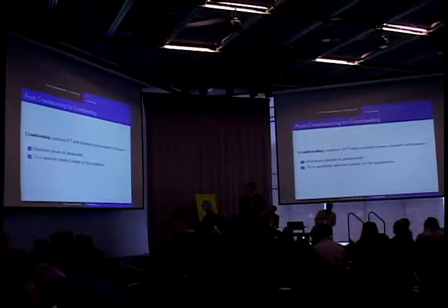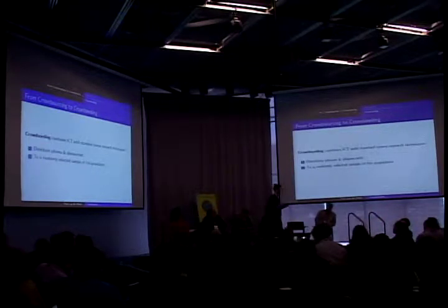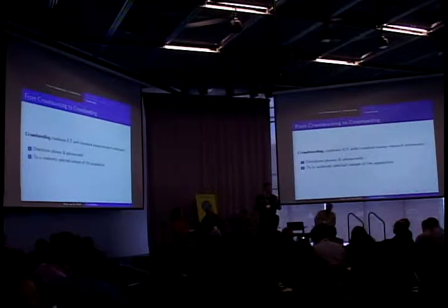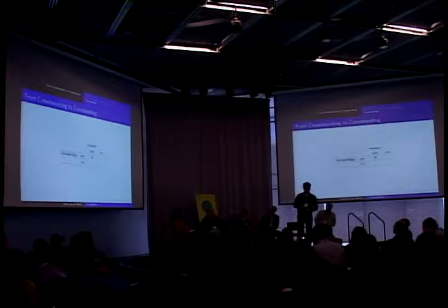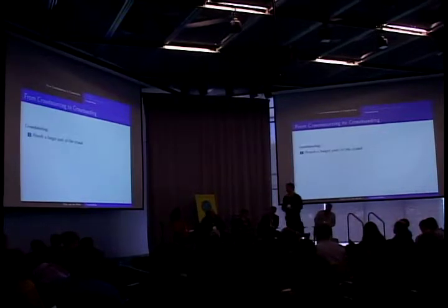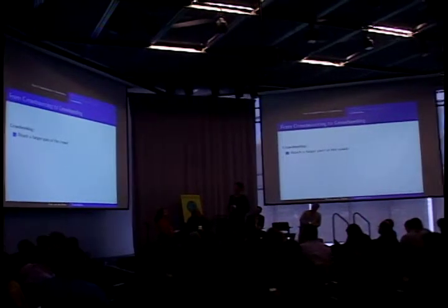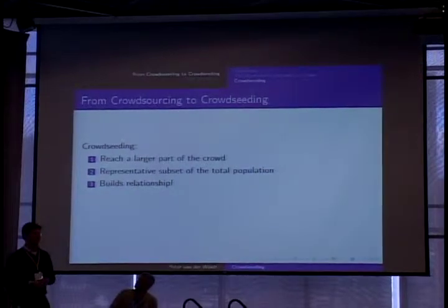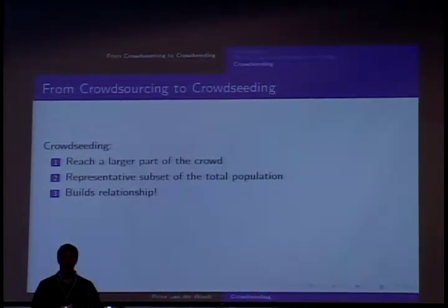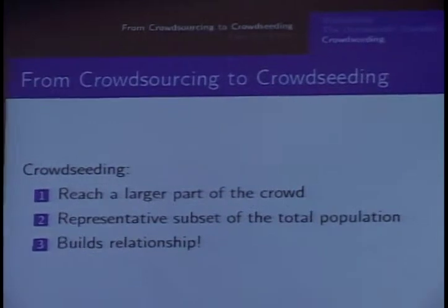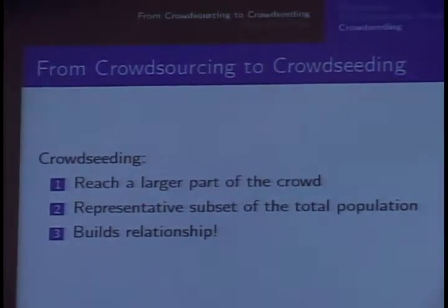So we introduced a concept called crowd seeding. Crowd seeding is nothing more than combining this idea of ICT with standard survey techniques. What we did is we distributed cell phones and phone credits — we actually gave the means to the people — and we did this to a randomly selected sample of the population. There are three important things with crowd seeding: you reach a larger part of the crowd, it's representative, and very important in these areas, you build a relationship. You know the person with the cell phone, they know you, and over time you build trust — meaning people start providing much higher quality data, especially on sensitive issues.